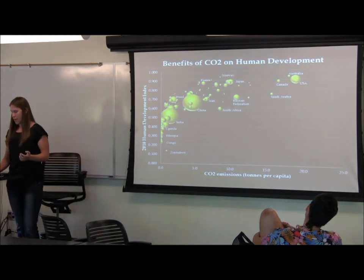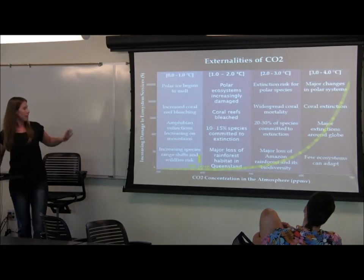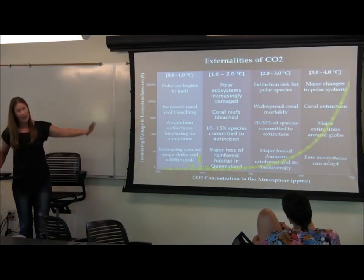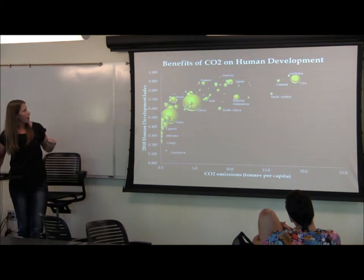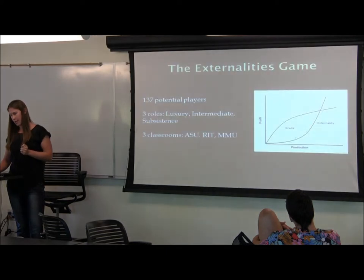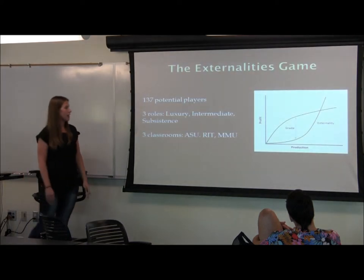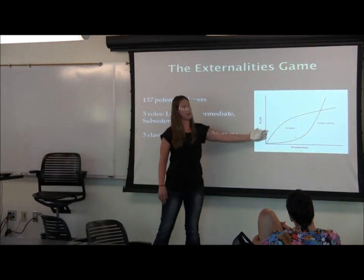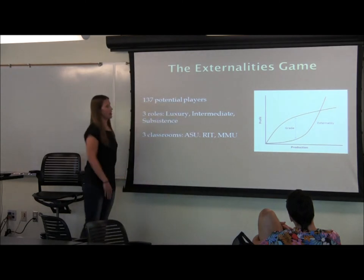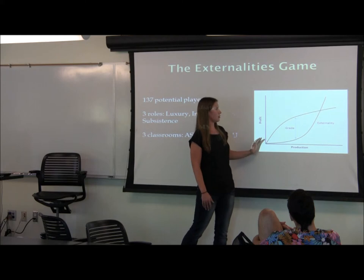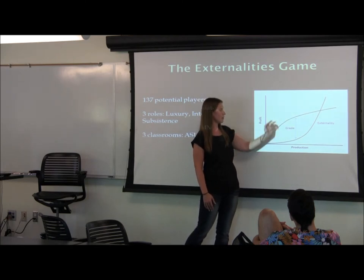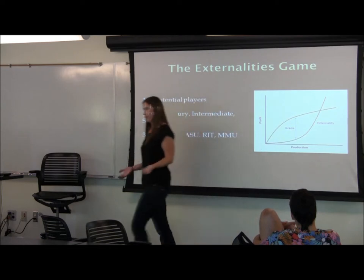If you think about the exponential damage curve from the first slide, and the saturation effect of the human development curve of CO2, it's pretty much how we structured the externalities game — you can see similar curves there. In this class, your grade is determined by subtracting the units you produce minus your share of the externality points that everyone produces.